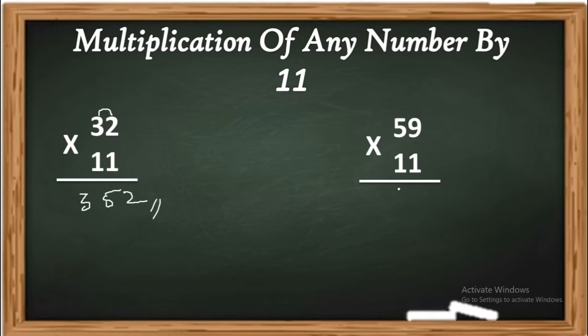What about 59 into 11? First, 9 as it is 9, and 5 as it is 5. 5 plus 9, the 5 plus 9 is 14.